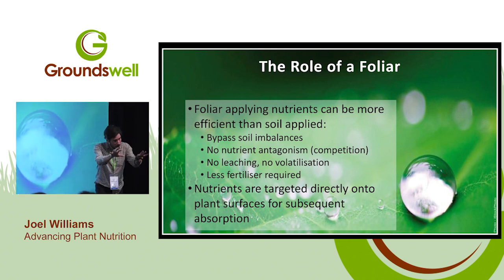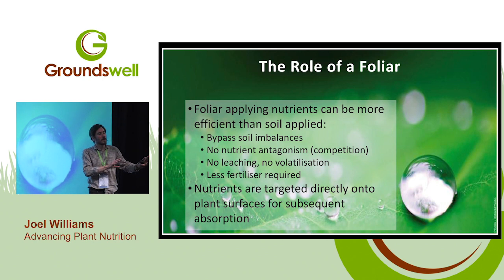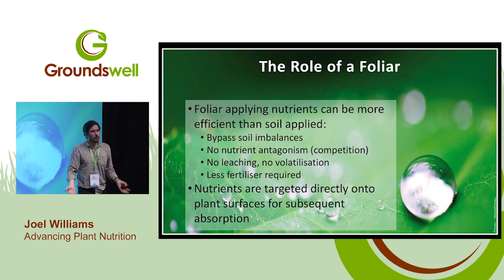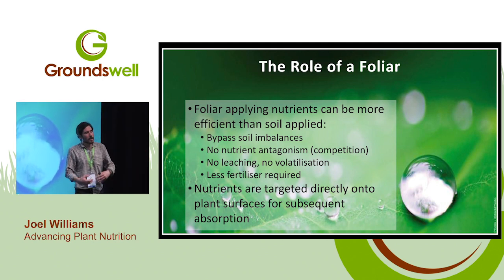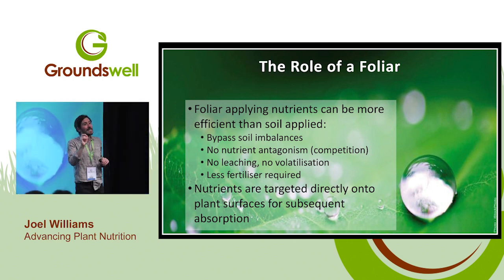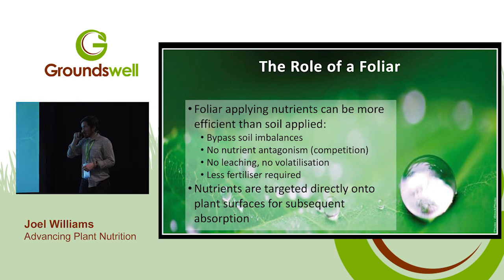This is all helping to drive nutrient use efficiencies. It's very small amounts of nutrients that we apply via foliar, and that's one of its limitations — there's a maximum we can put out through the foliar. But in terms of being more targeted and using less while improving efficiencies, it can have a really good complement to our soil-based strategies.